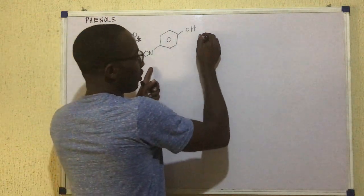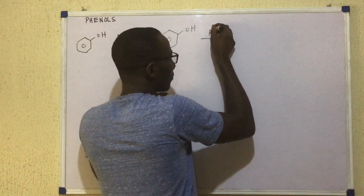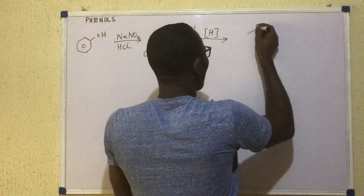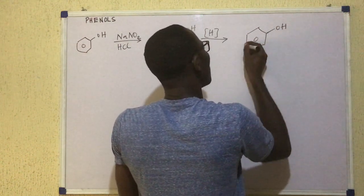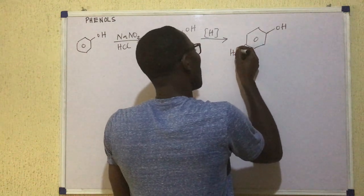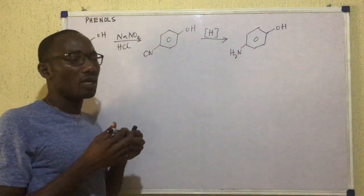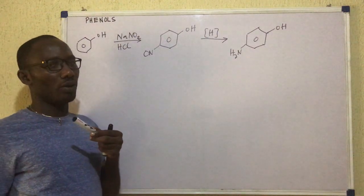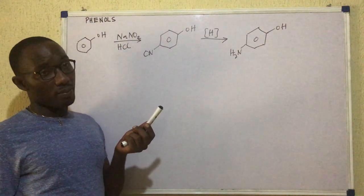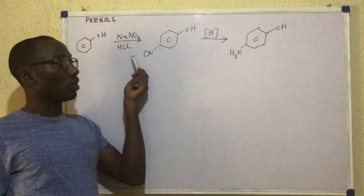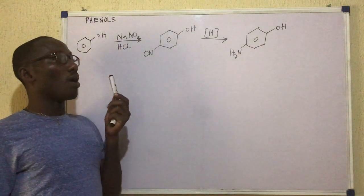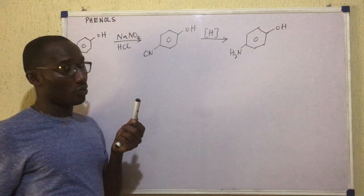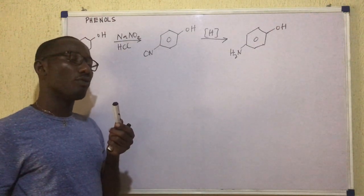That para-nitrosophenol, upon reduction, upon reduction becomes OH and then H2N. That one would be called para-aminophenol. So para-aminophenol can be prepared from this reaction, although the initial product is para-nitrosophenol. When para-nitrosophenol is reduced, then we get para-aminophenol.